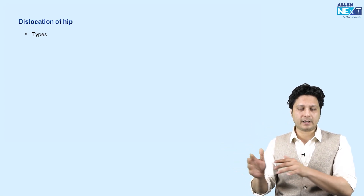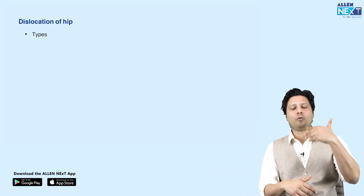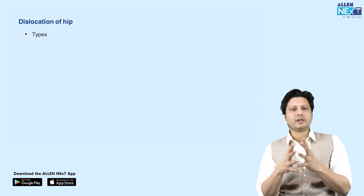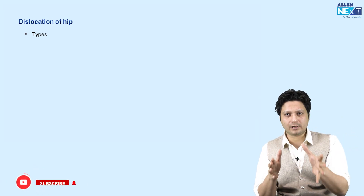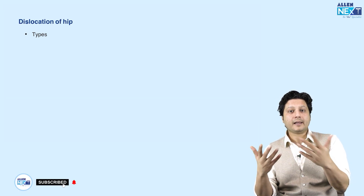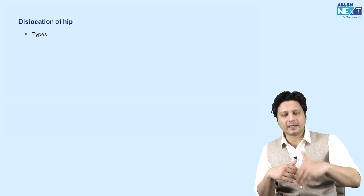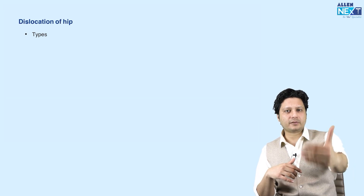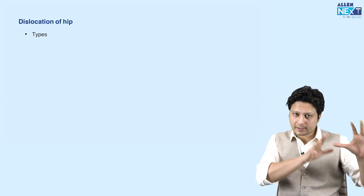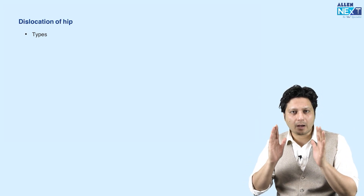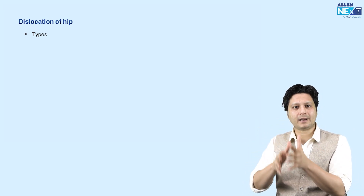The first very important topic is the dislocation of the hip joint. This is the kind of patient who will land up in the emergency unexpectedly and you have to manage the patient immediately. Immediate management is required; you cannot convert this kind of emergency into an elective procedure. That is the reason why the examiner is keen for you to remember everything related to these dislocations of the hip joint.